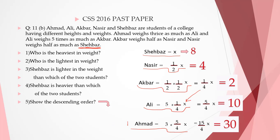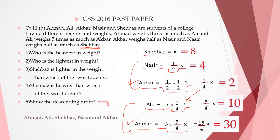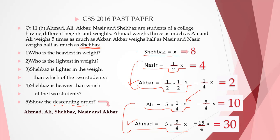Ahmed is the heaviest in weight. Akbar is the lightest in weight. Shehbaz is lighter than Ali and Ahmed. Shehbaz is heavier than Nasir and Akbar. And we can write them in descending order.